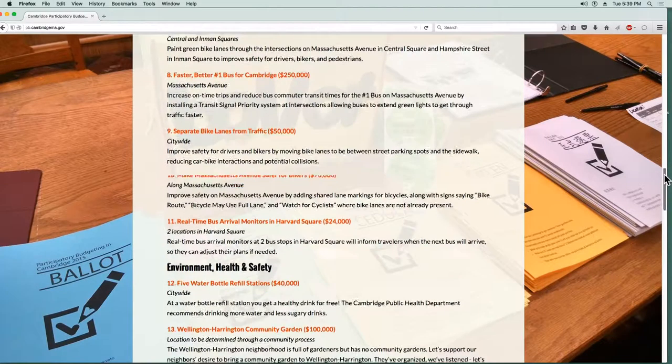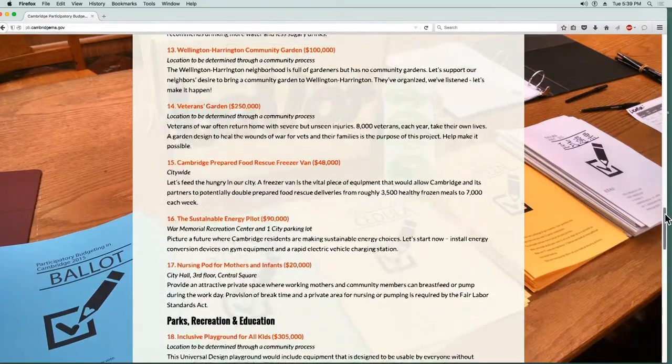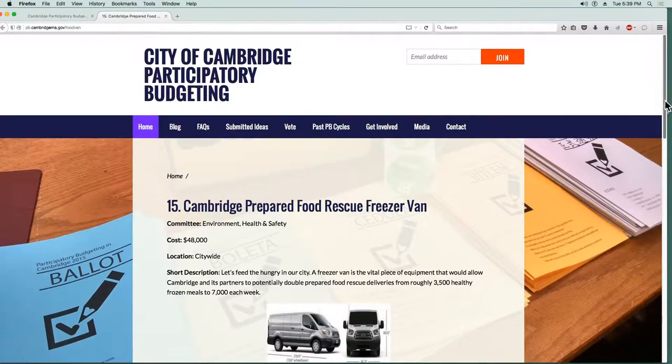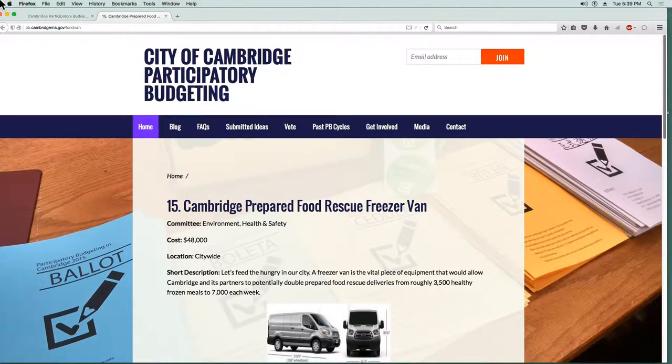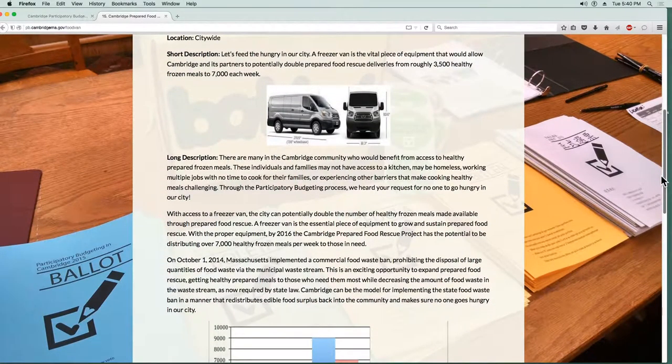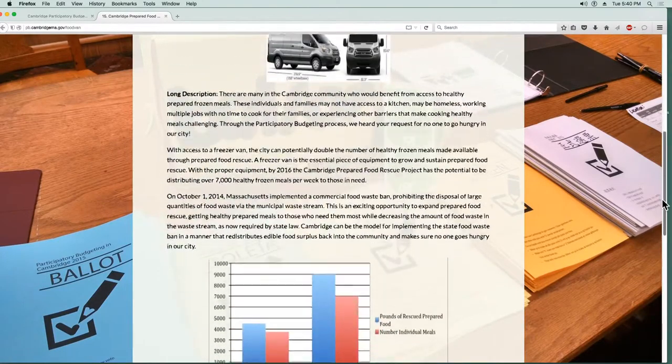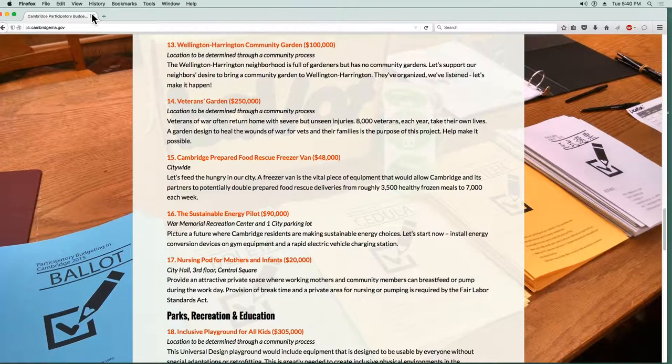Under environment, health and safety, there's quite a few good ones. The Cambridge Prepared Food Rescue Freezer Ban, I really like that because we do so much in this city. Food for free is such a wonderful organization. It doesn't seem to be a lot of money to accomplish a lot. Just having an infrastructure to basically pick up and store surplus food is really a big part of the difficulty in making a system like this work.